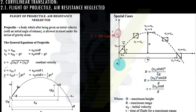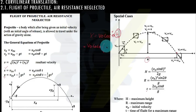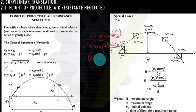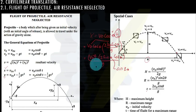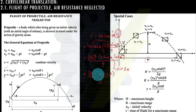To derive R from the x equation: x equals v sub o cosine theta multiplied by time. We substitute the total time of flight, which is 2 v sub o sine theta over g. This becomes v sub o squared times 2 sine theta cosine theta over g. Using the trigonometric identity, 2 sine theta cosine theta equals sine 2 theta, so the range formula becomes R equals v sub o squared sine 2 theta over g.